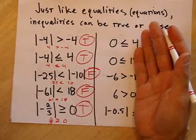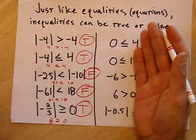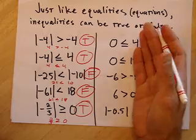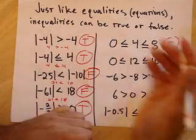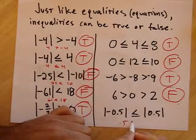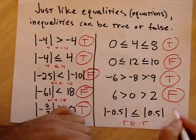What about 0? Is 6 greater than 0? Yeah. Is 6 to the right of 0? Yeah. Let's look over here. Is 0 to the right of 2? No. And let's see these guys. Is 0.5 less than or equal to 0.5? Yes. True. So just like we do with equations.